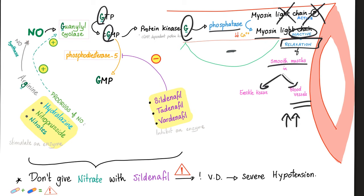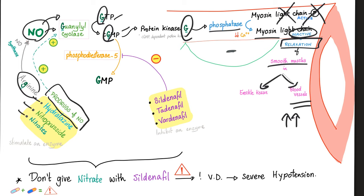How can you dilate your vessels? You can give prodrugs of nitric oxide, because nitric oxide stimulates guanylate cyclase → GTP → cyclic GMP → relaxation. What are the prodrugs of nitric oxide? Hydralazine, nitroprusside, and nitrates — these stimulate guanylate cyclase, relax smooth muscle, and dilate your vessels.